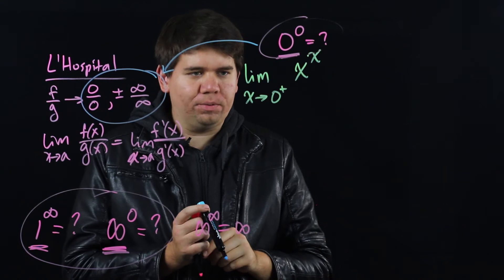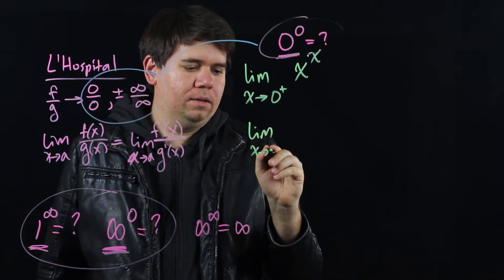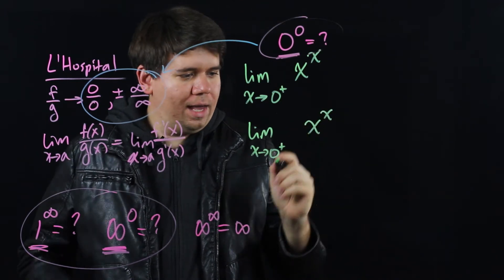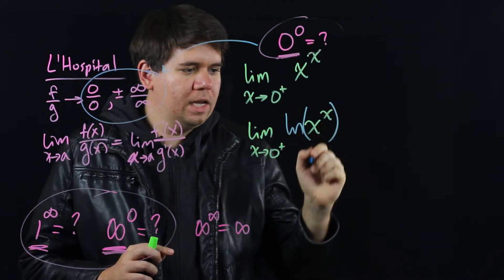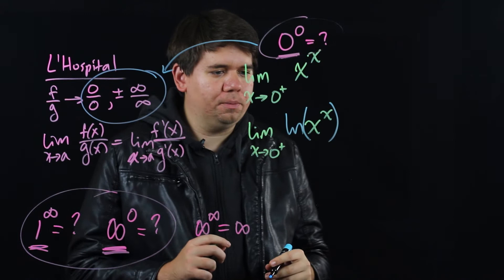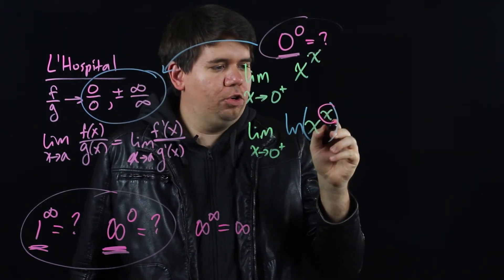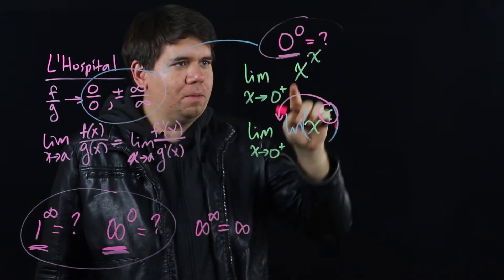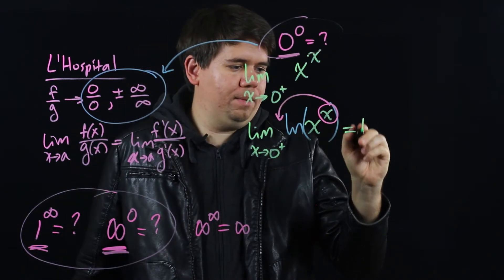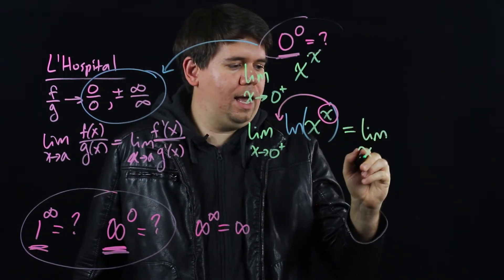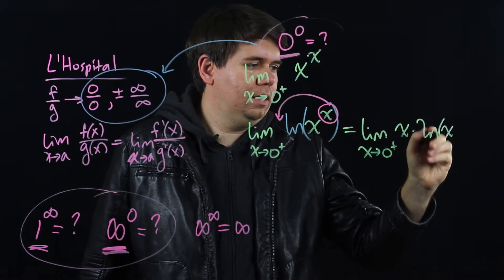The trick is to solve a slightly different problem. Instead of thinking about the limit as x goes to 0 from the right hand side of x to the x, let's go ahead and begin by just taking the natural log. By taking the natural log of this expression we're able to then use our log properties. In particular since you have x to the x you can move that power out front. So the power that was causing the trouble we can now get rid of. This will just be the limit as x goes to 0 from the right hand side of x times the natural log of x.